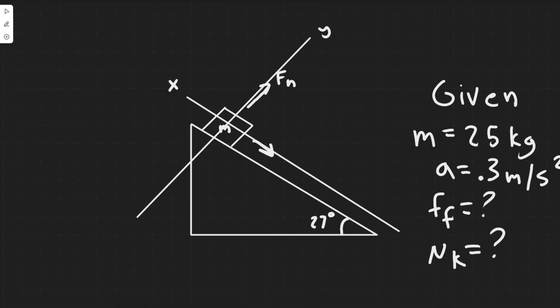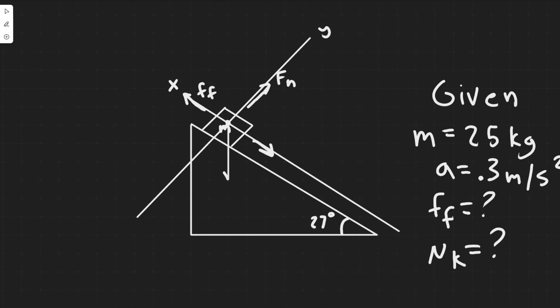Next, label the force of friction. Since the box travels down the incline, friction acts opposite to that direction — so friction points up the incline along the x-axis. The last force is gravity, which acts straight down. Because gravity isn't along either axis, we need to split it into its x and y components.